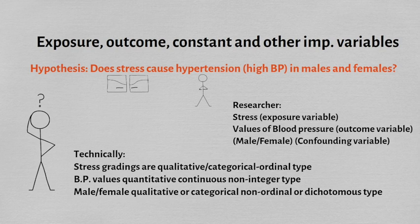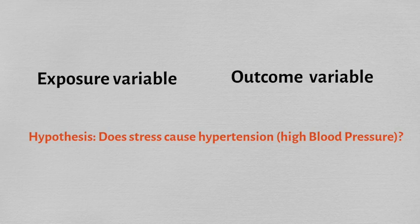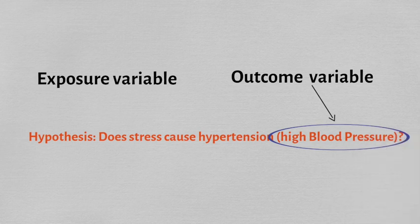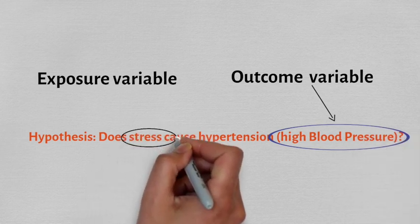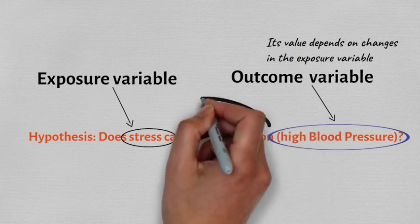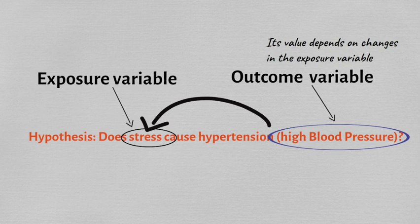There are two main types of variables: an outcome variable and an exposure variable. If the research question is whether stress causes hypertension or high blood pressure, then high blood pressure is the outcome variable and the level of stress is the exposure variable. The value of the outcome variable relies on changes in the exposure variable — for example, blood pressure can go up when stress levels are high and go down when the level of stress is low.